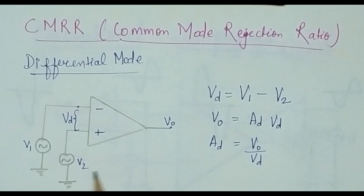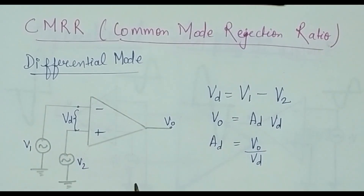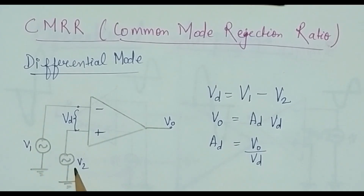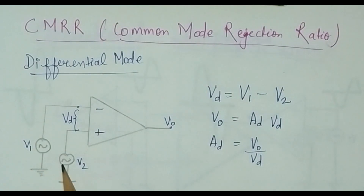A very important thing about differential mode is that when the op-amp is operating in differential mode, the input voltages V1 and V2 should be different. If V1 and V2 are the same, then they should have opposite polarity, or there should be a phase difference of 180 degrees.